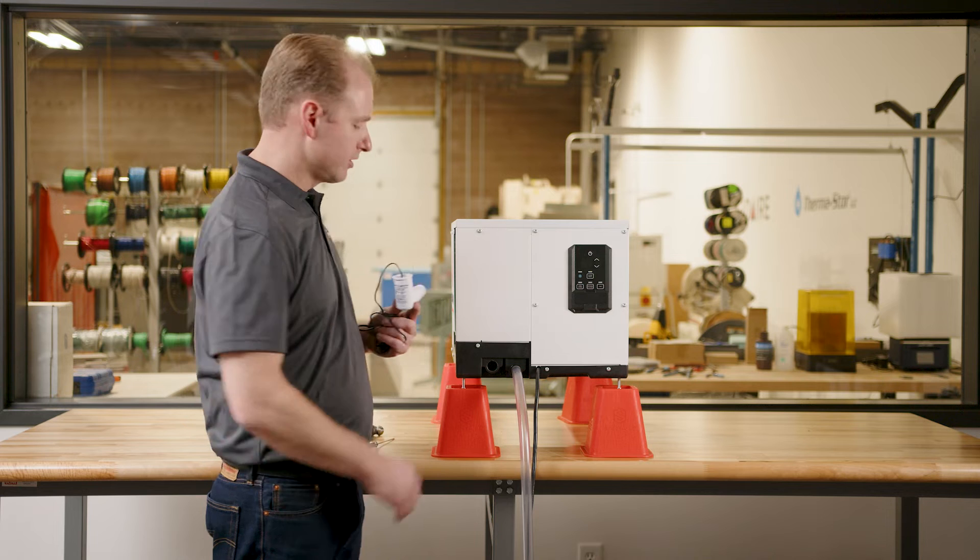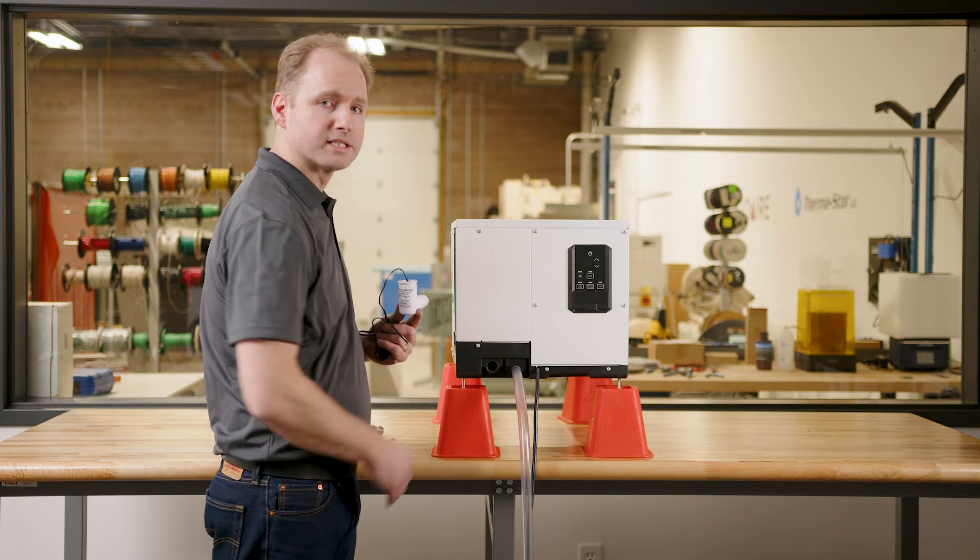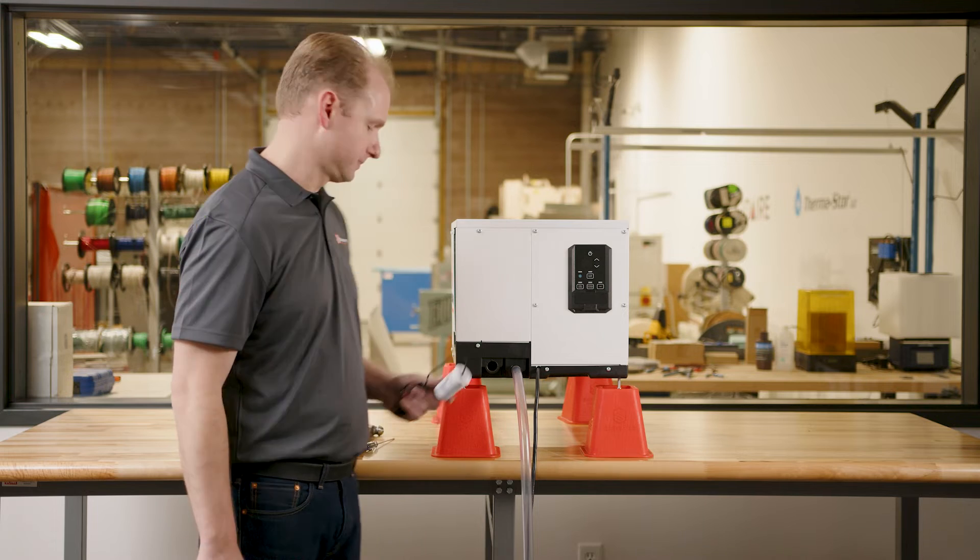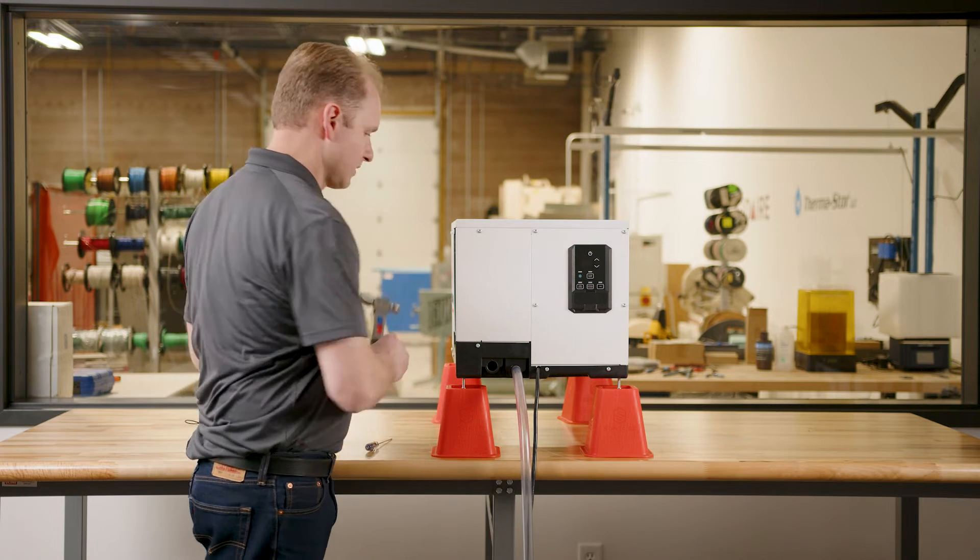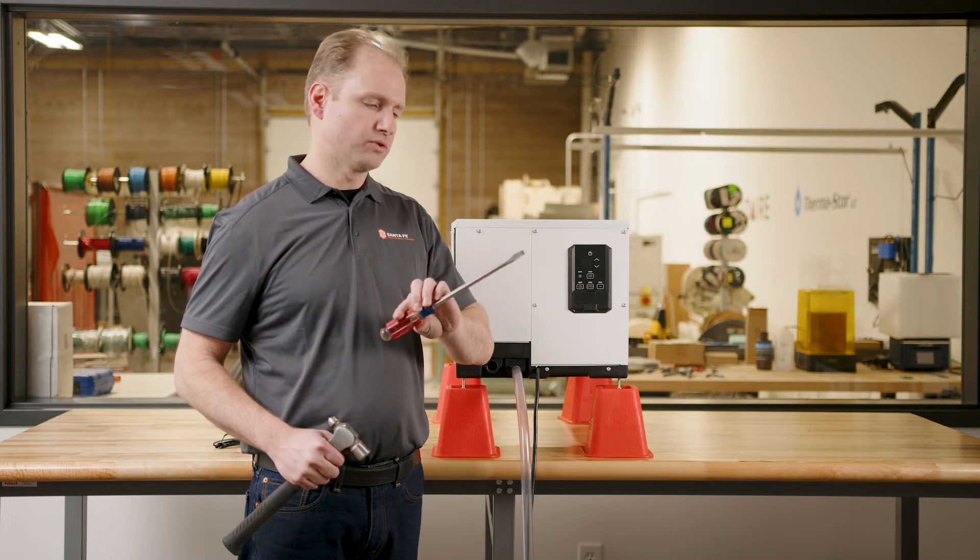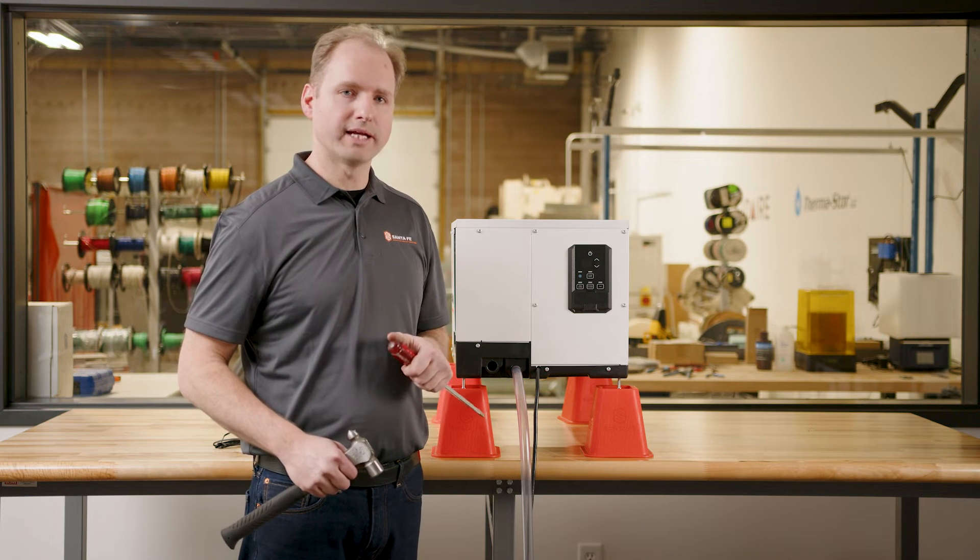Before we install it, there's a plastic membrane in this port that has to be broken out to allow water to flow into the safety float switch. We'll use a simple hammer and chisel or screwdriver to break out that plastic membrane.